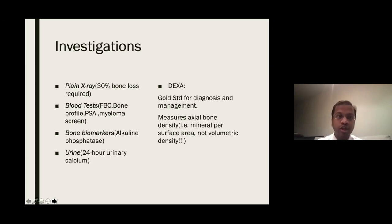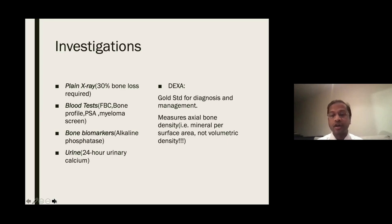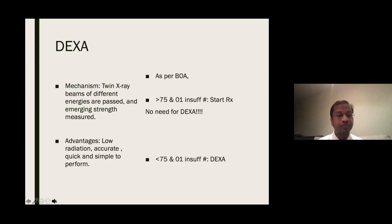Investigation-wise, you need to know about plain X-rays and the fact that 30% bone loss is required to manifest osteoporosis on X-ray. During my exam, the examiner took me directly to the DEXA scan. However, it is worthwhile knowing the different parameters, including blood tests — FBC, bone profile, prostate-specific antigen, myeloma screen, alkaline phosphatase, and 24-hour urinary calcium. The gold standard for diagnosis and management is the DEXA scan, which measures mineral per surface area of bone. It uses a twin X-ray beam passed through the target of interest — lumbar spine or proximal femur — and the emerging strength is measured in two axes to give a bone density estimate.